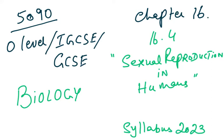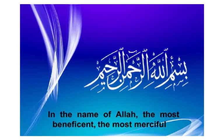Bismillah ar-Rahman ar-Rahim. This is 5090 O-Level, and it also works for IGCSE and GCSE Biology. We're going to be doing Chapter 16.4, which is Sexual Reproduction in Humans. It could be another chapter in other syllabuses, but basically the heading would be Sexual Reproduction in Humans. We are doing the syllabus 2023. In the name of Allah, the Most Beneficent and the Most Merciful.